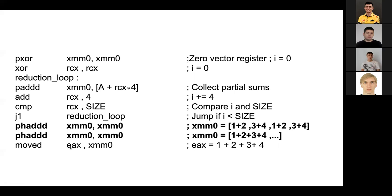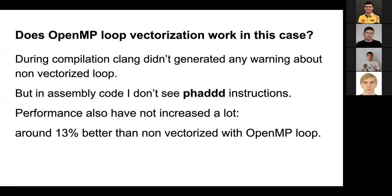Now let's discuss the results of this vectorization with OpenMP. I was not able to achieve good results — I obtained only a 13% gain in performance with the OpenMP vectorized loop. I also inspected the assembly code and did not find the PHADD horizontal add operation, which suggests the loop was not vectorized properly. Usually a compiler warns the developer when a loop was not vectorized, but in this case the compiler was silent.